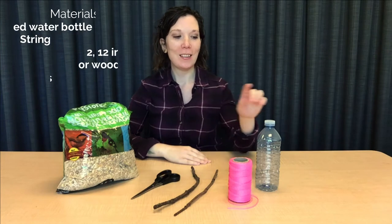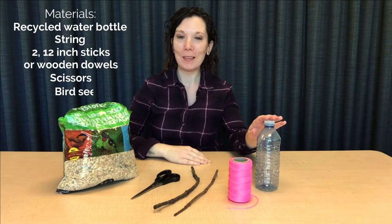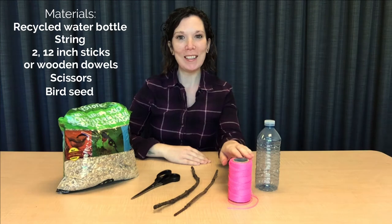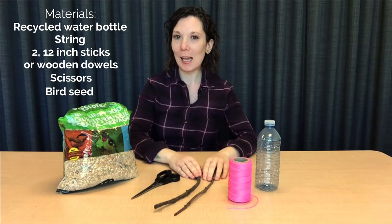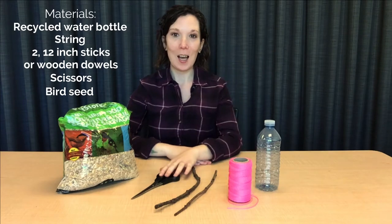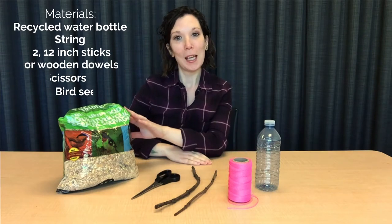All that you need for the bird feeder is a recycled water bottle, some string, a couple of sticks or wooden dowels at least 12 inches long, a pair of scissors, and some bird seed. Let's get started.